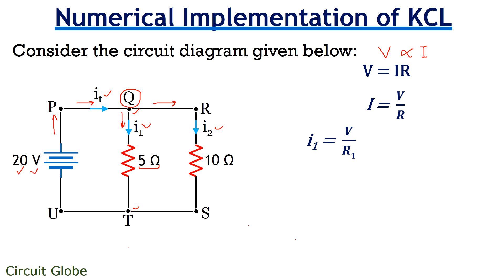And so, this same potential difference will appear across QT and RS. Fine. So, substituting the value we get, I1 is equals to 20 upon 5. 20 is the potential difference existing between QT and 5 is the value of the resistor. So, we will get 4 ampere current which is flowing through QT branch.